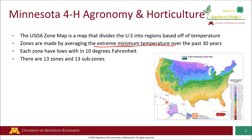Each zone includes a region that has a range of temperatures of 10 degrees Fahrenheit. In the United States we have 13 zones and 13 sub-zones. These sub-zones are made the same way that our zones are, but instead of including areas with a range of 10 degrees Fahrenheit, their range is only 5 degrees Fahrenheit.